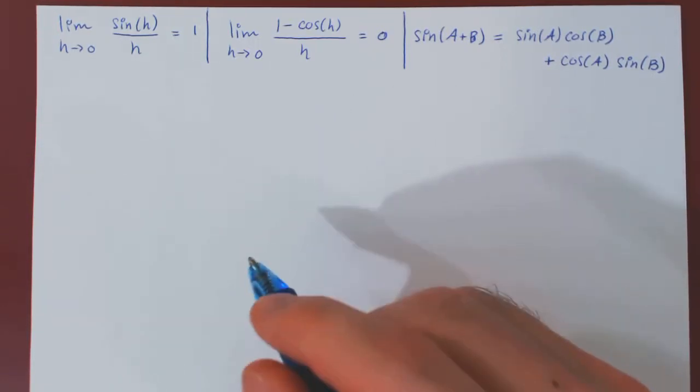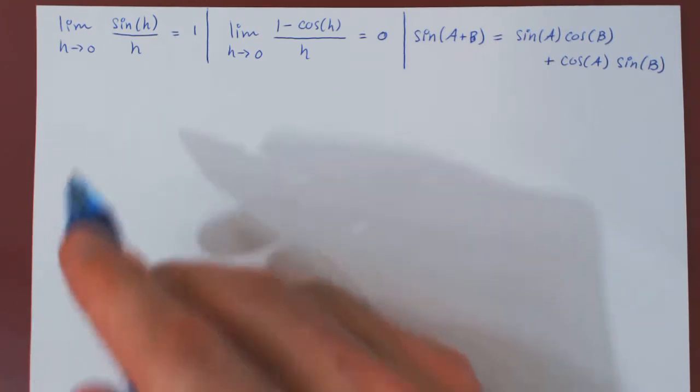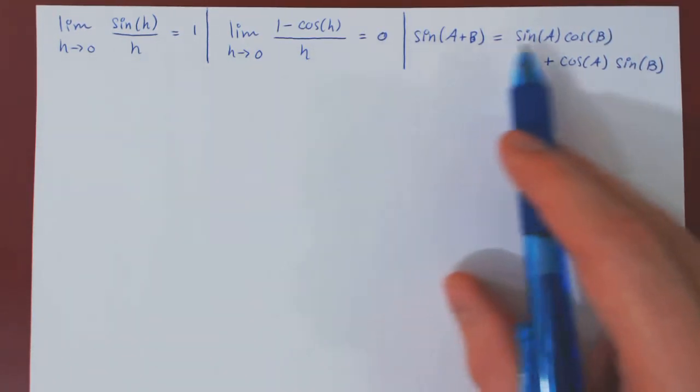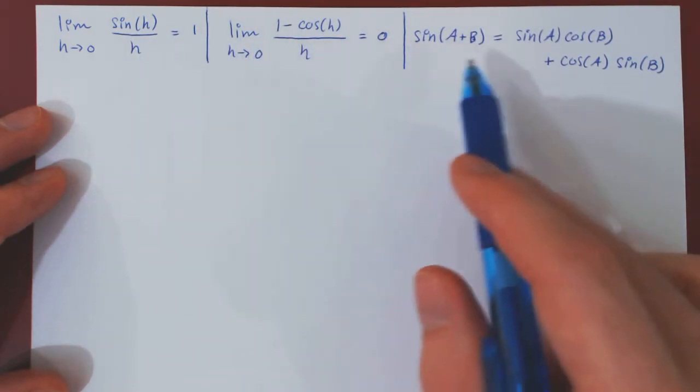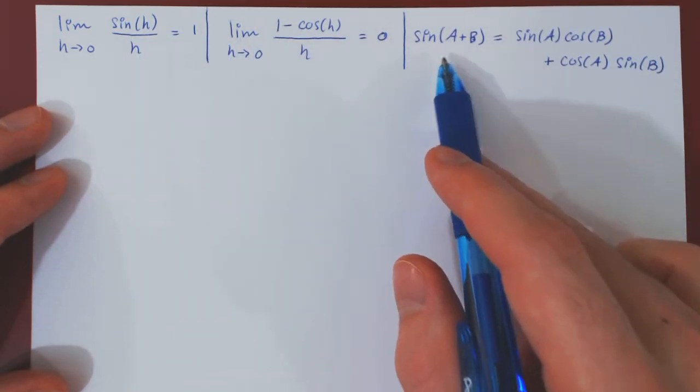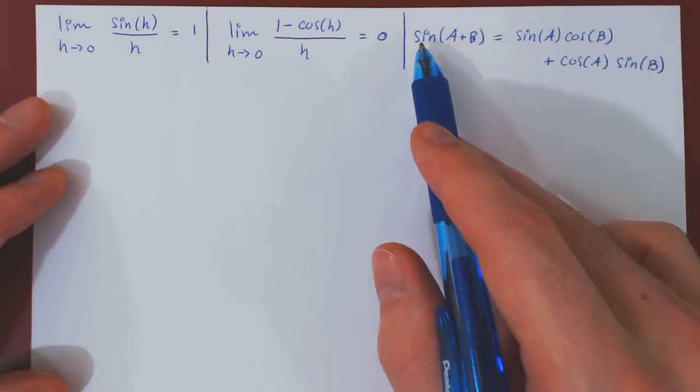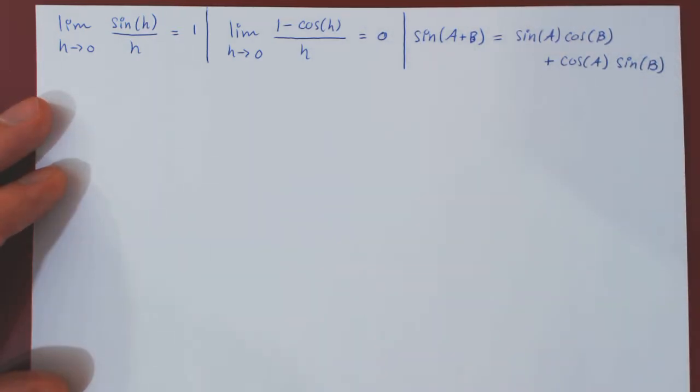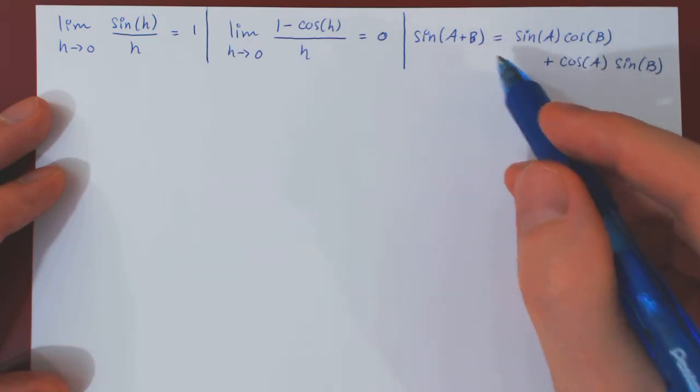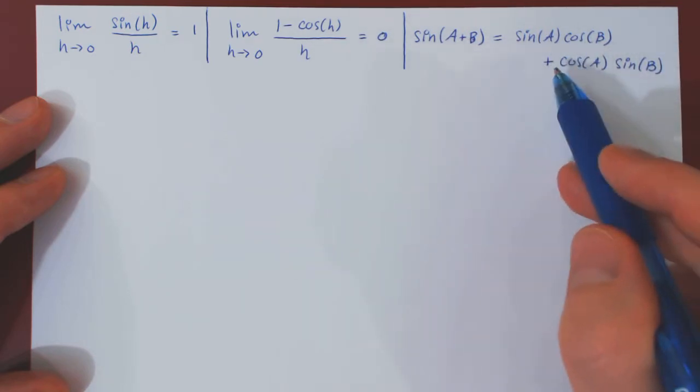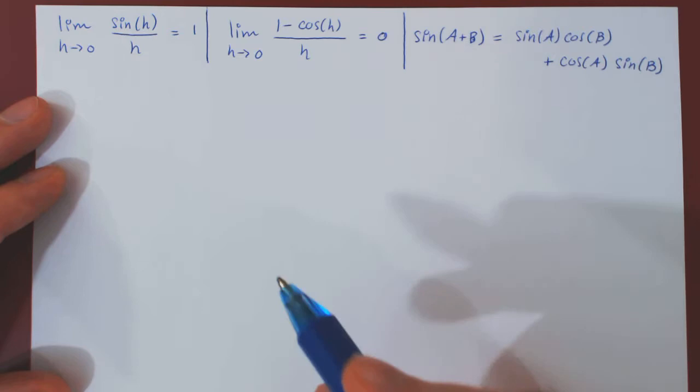Okay, so in this video, we will find the derivative of sin of x using the following three results. Now, the first two limits we have derived previously, and the third result is a fundamental trigonometric identity. Hopefully, it is a familiar one, and that is that sin of a plus b is equal to sin of a cos of b plus cos of a sin of b.